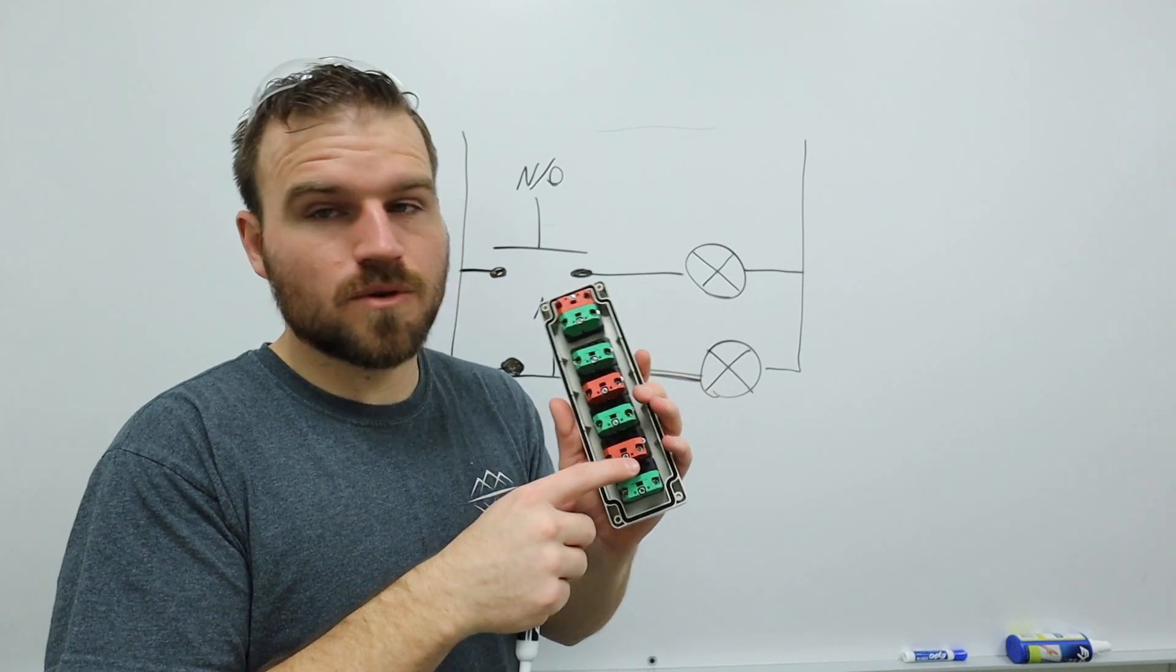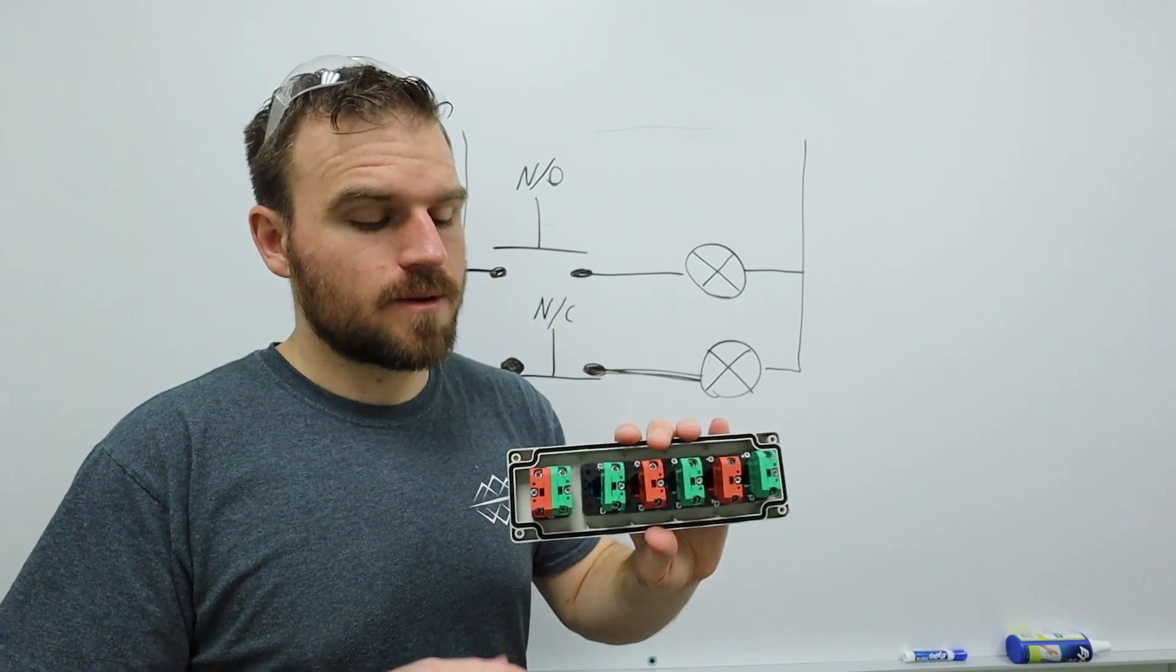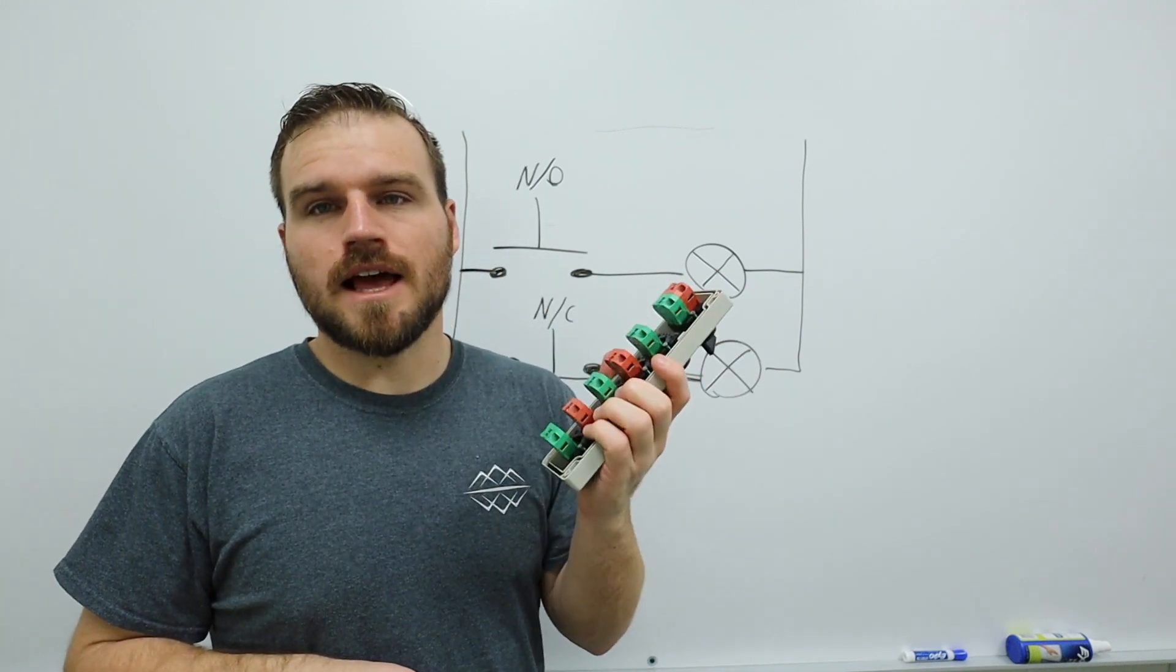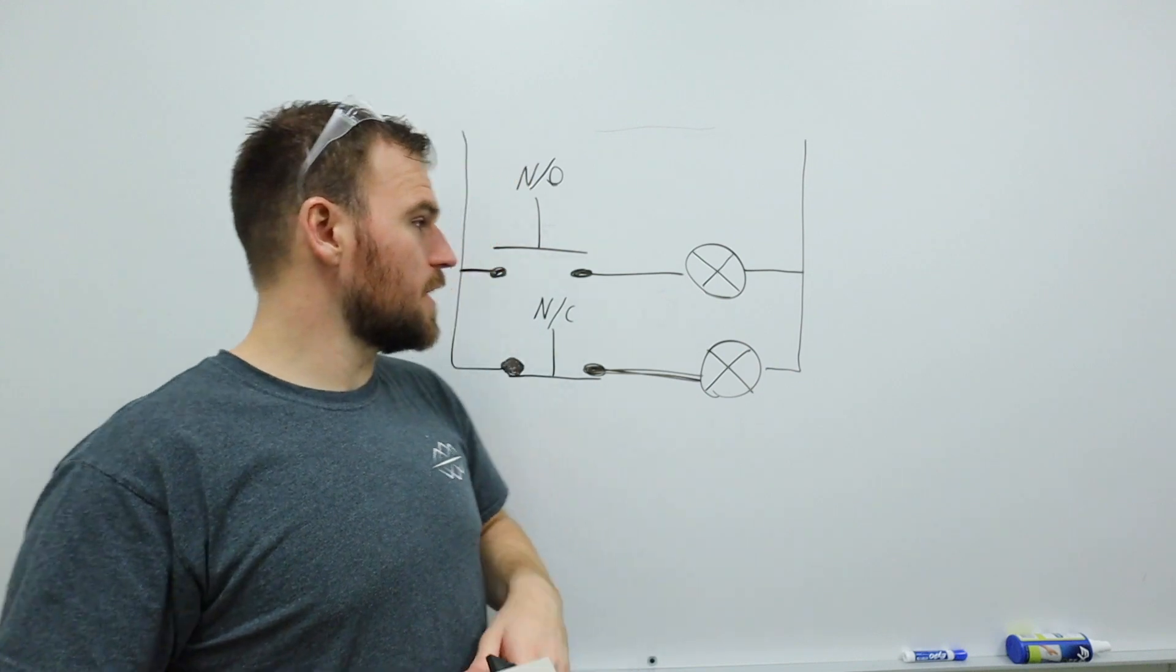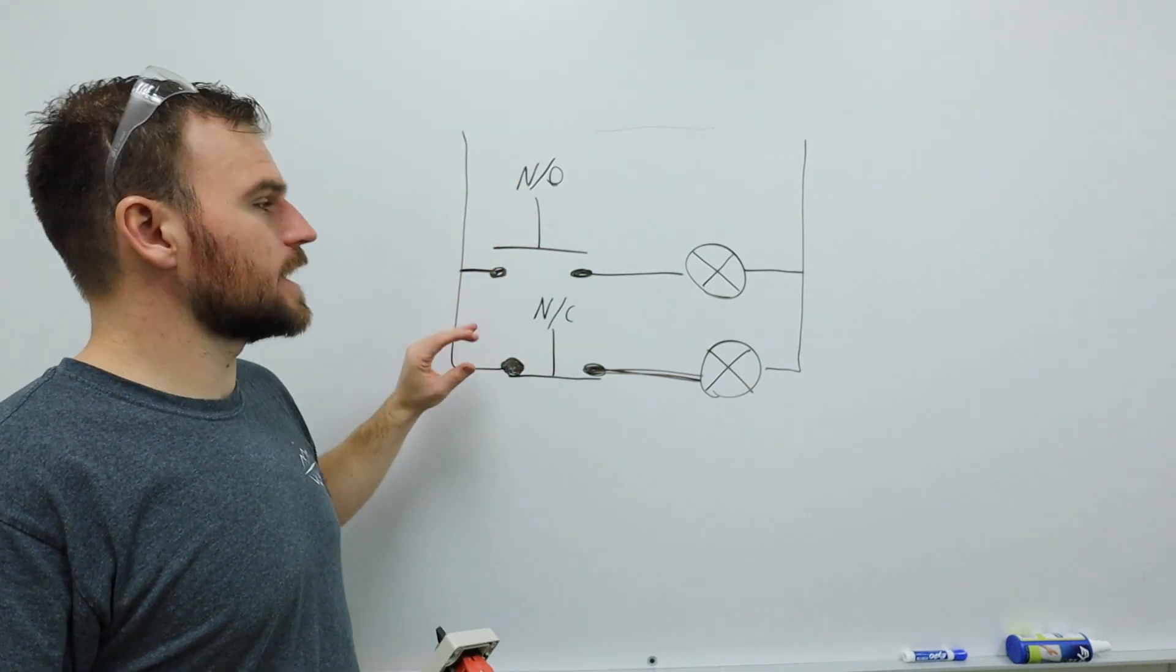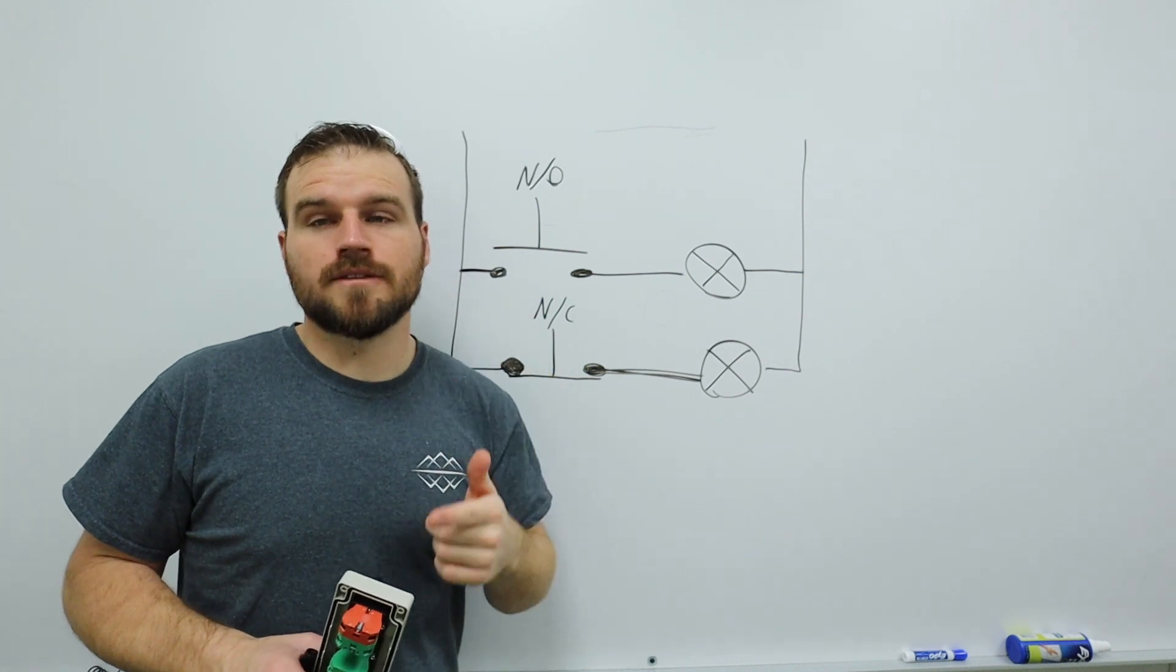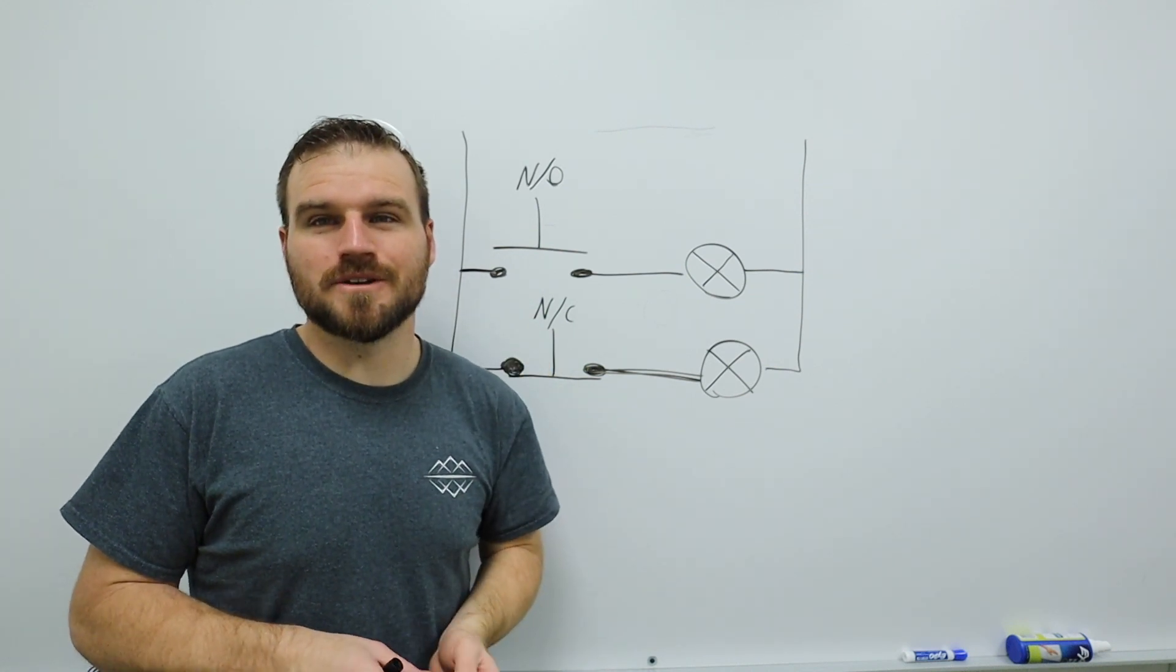Also, you can have more than one switch on each one of these buttons. And there may be an activity where you're actually required to do that throughout this class. But otherwise, that's all you need to know for right this second about normally open, normally closed. I hope this helps you guys. Please get out there, get some work done on those trainers, all right?